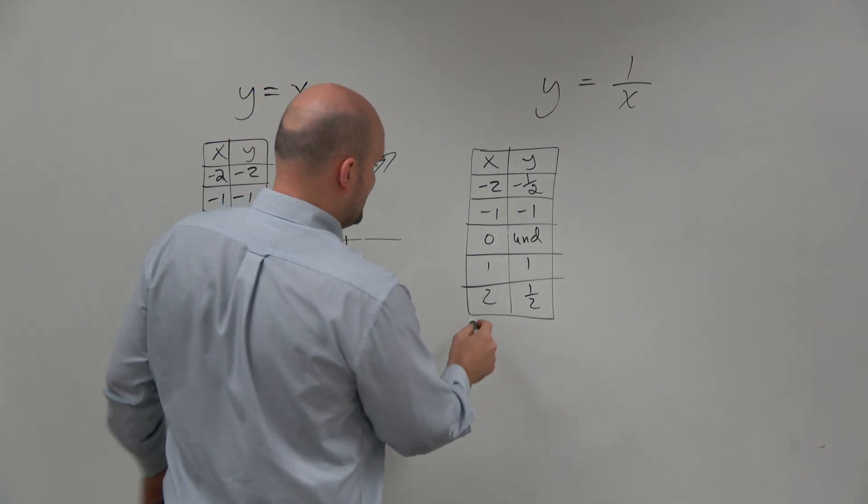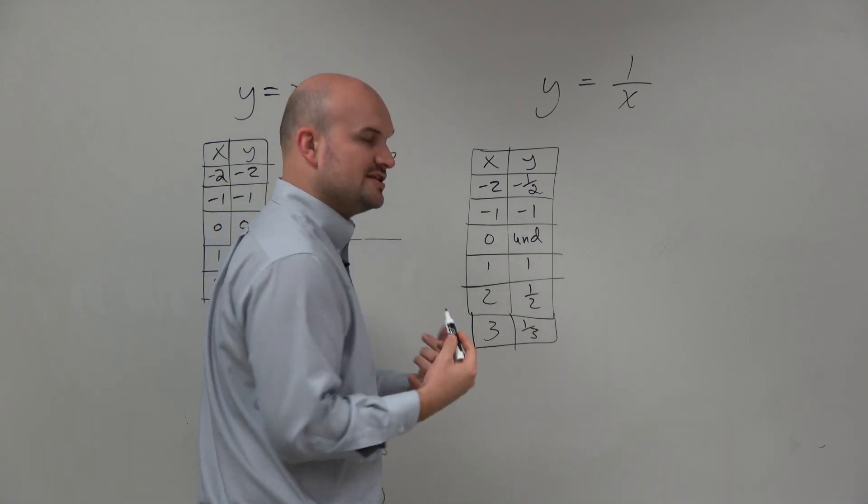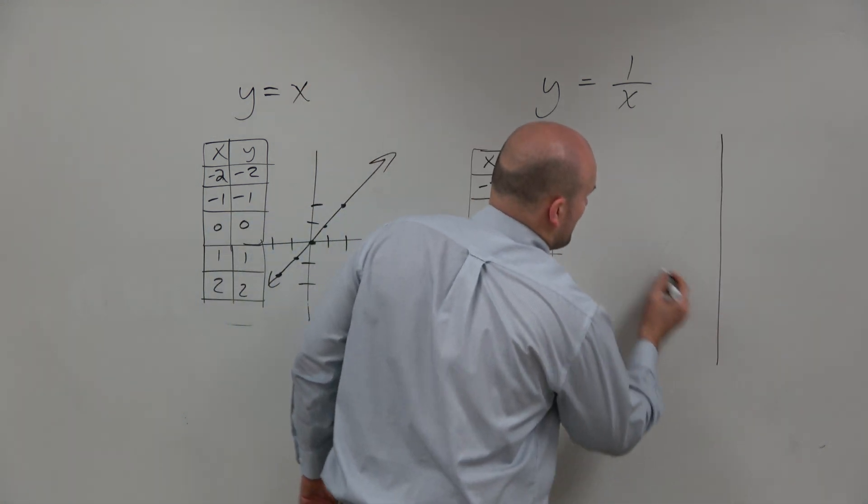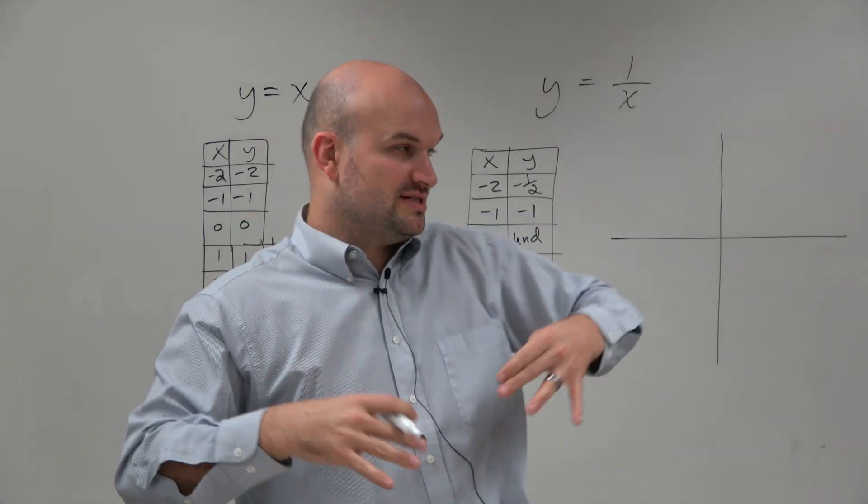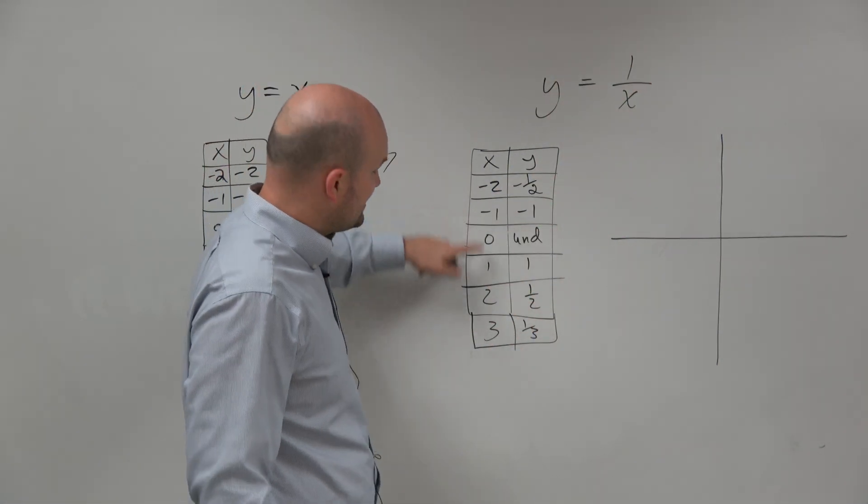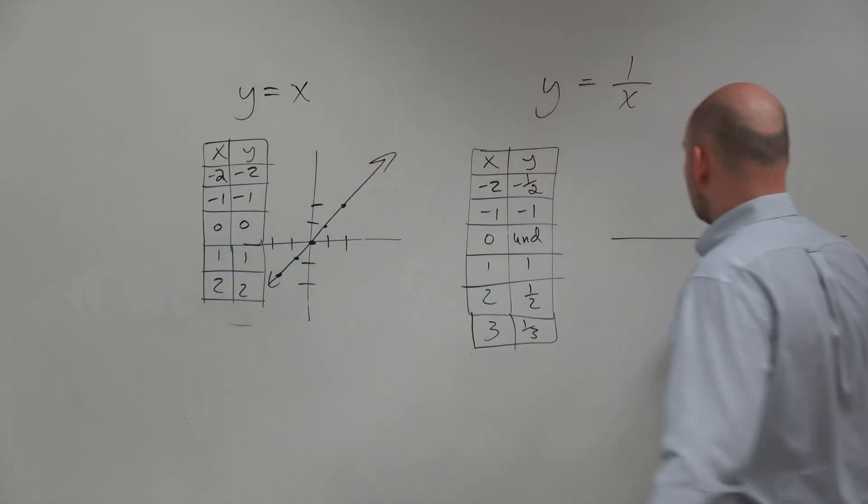We could continue this pattern. You could see that if I did 3, that would be 1/3, and so on. If you're not understanding the pattern, you could keep going to larger and larger numbers and smaller and smaller numbers to really get this pattern. But let's go ahead and graph this.